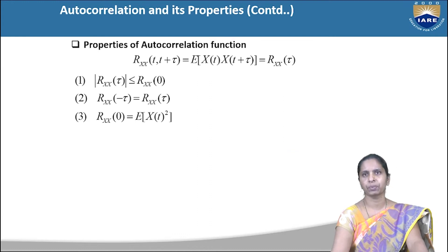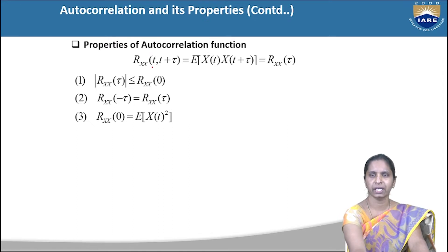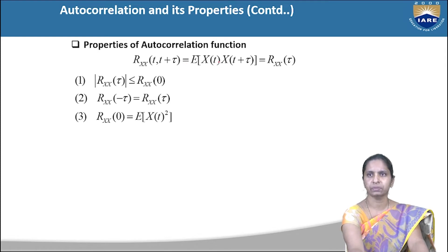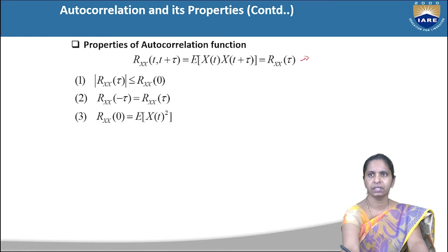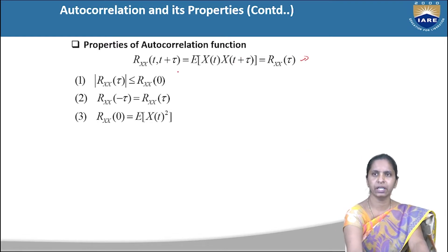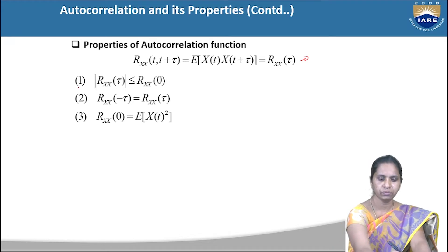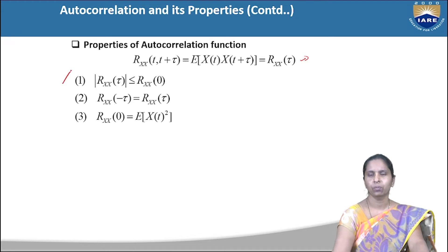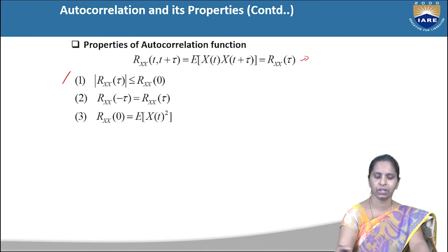Let us now see the properties of the autocorrelation function. The autocorrelation function of a random process x(t) is R_xx(t, t+τ) = E[x(t) * x(t+τ)]. For a stationary random process, it is a function of only τ, written as R_xx(τ). The first property states that |R_xx(τ)| ≤ R_xx(0). R_xx(0) is the autocorrelation function at the origin.